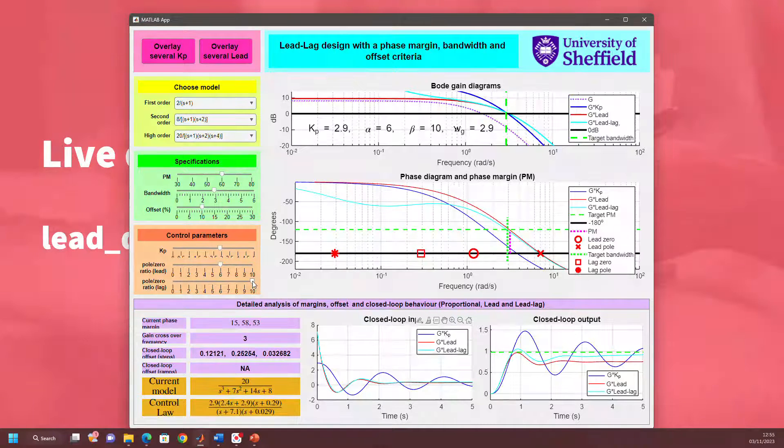You can see we can only get so far. Maybe our conclusion is going to be for this particular system, our offset criteria is too ambitious. But you get the idea of what you can do.